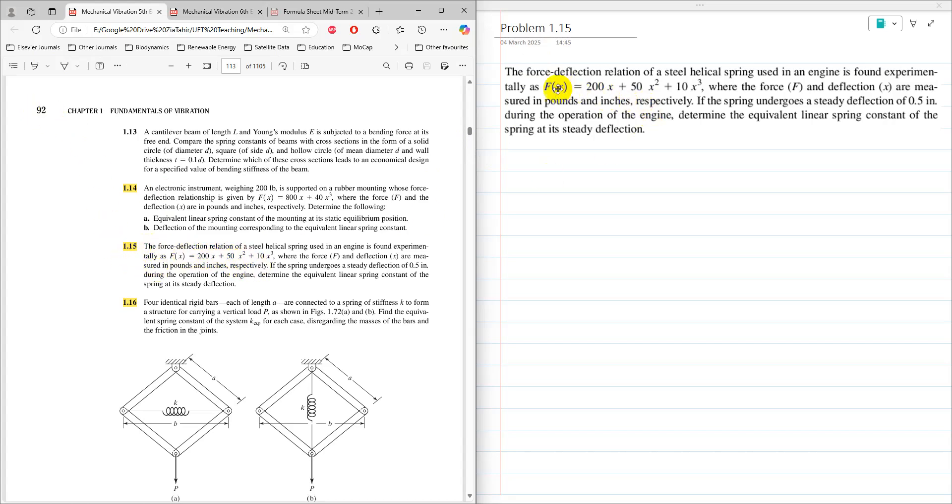The statement is: the force deflection relation of a steel helical spring used in an engine is found experimentally as f(x) = 200x + 50x² + 10x³, where the force f and deflection x are measured in pounds and inches, respectively.